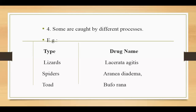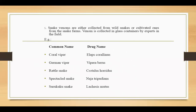Snake venoms are either collected from wild snakes or cultivated ones, from whom the snake venom is collected in a glass container by expressing the fang. Examples: Common name Boreal Viper — drug name Vipera; German Viper — Vipera Verus; Reden Snake — Crotalus Horridus; Banded Rattlesnake, Canebrake; Spectacled Snake.